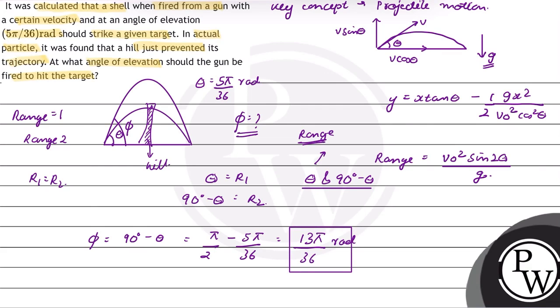So the angle of elevation for the gun to hit the target is 13π by 36 radian. Hope you understood this well, best of luck.